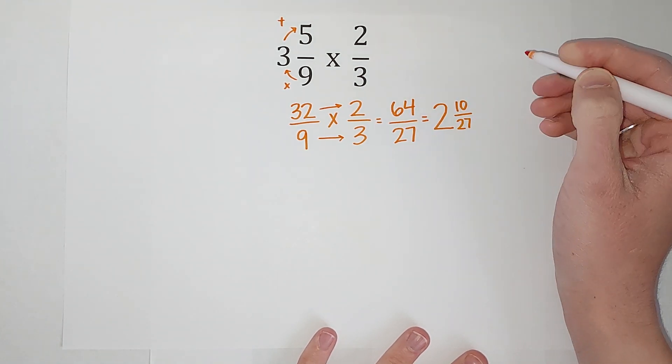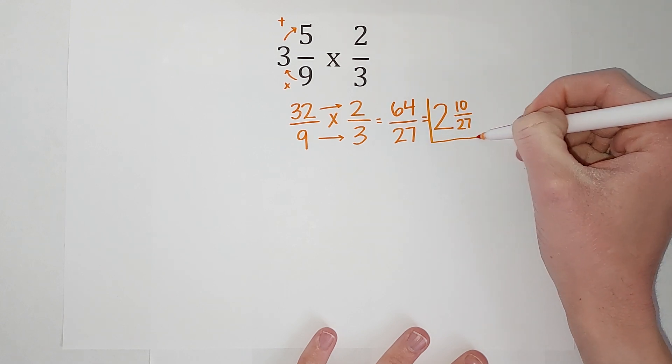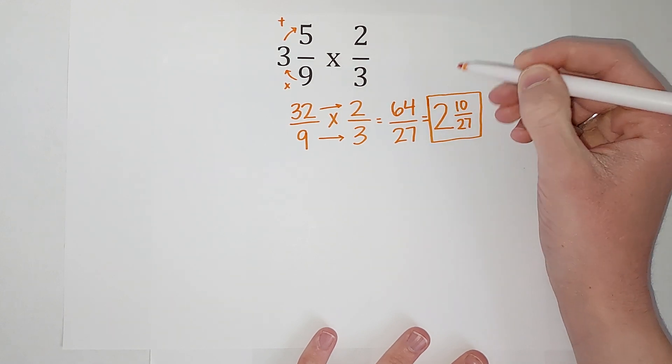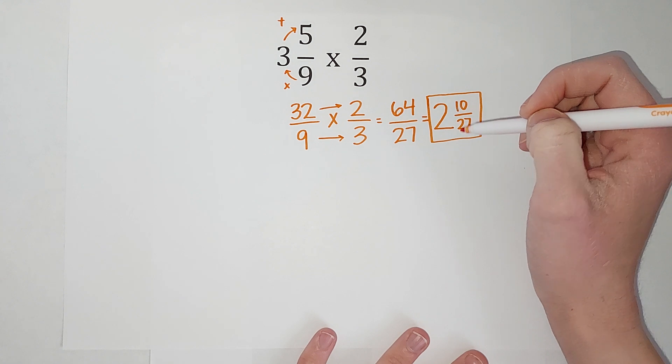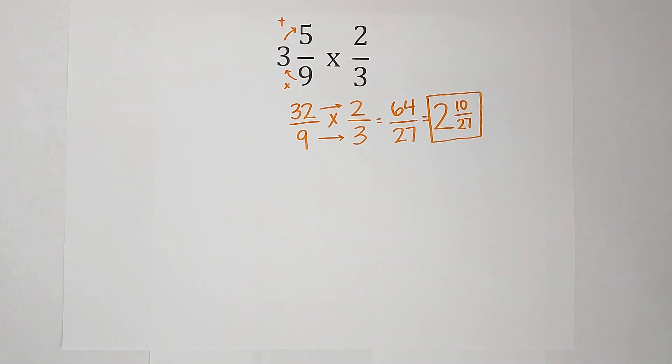I feel like 2 and 10/27 is easier to picture than 64/27, but maybe that's just me. Hopefully this helped. Bye!